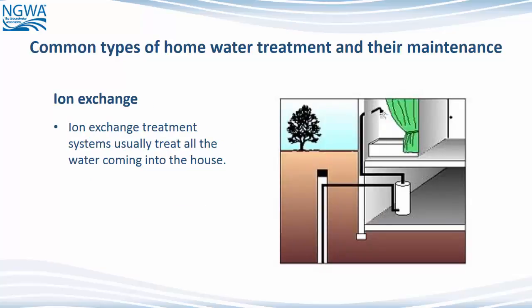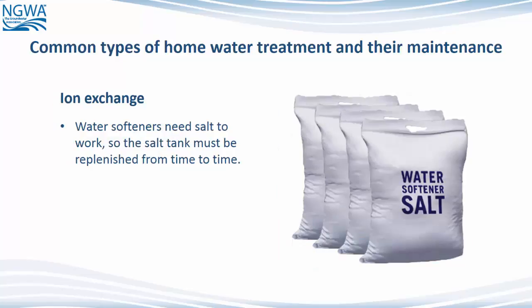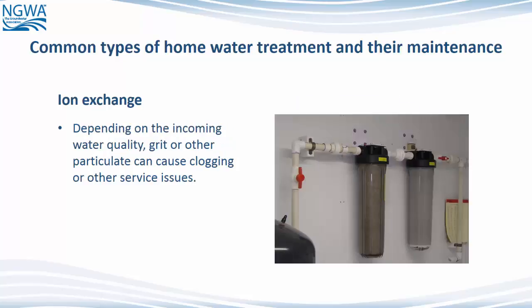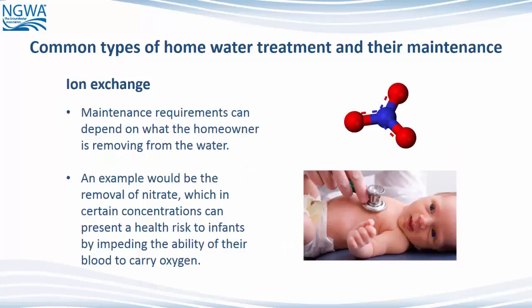Ion exchange treatment systems usually treat all the water coming into the house. Water softeners need salt to work, so the salt tank must be replenished from time to time. Depending on the incoming water quality, grit or other particulate can cause clogging or other service issues. Maintenance requirements can depend on what the homeowner is removing from the water. An example would be the removal of nitrate, which in certain concentrations can present a health risk to infants by impeding the ability of their blood to carry oxygen.